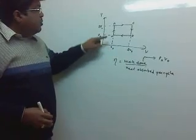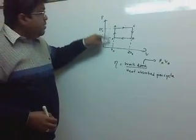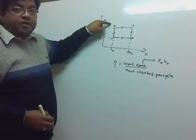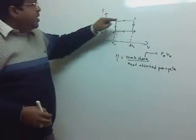From A to B, at constant volume, pressure is increasing, so temperature is increasing. So from A to B, there is absorption of heat.